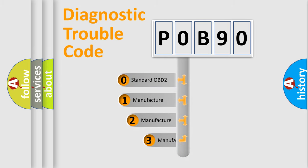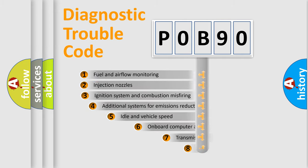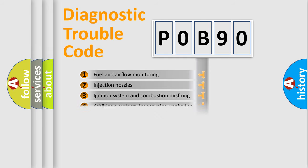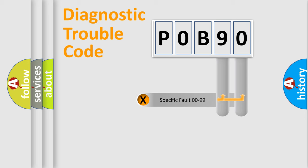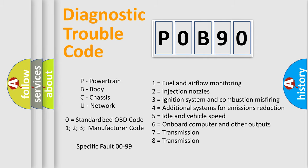If the second character is expressed as zero, it is a standardized error. In the case of numbers 1, 2, or 3, it is a more manufacturer-specific expression of a car-specific error. The third character specifies a subset of errors. This distribution is valid only for the standardized DTC code, and only the last two characters define the specific fault of the group. Such a division is valid only if the second character is expressed by the number zero.